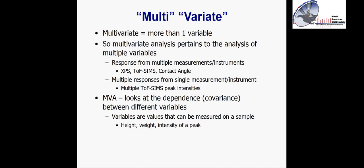When we talk about multivariate analysis, multivariate just means more than one variable — multi and variable. It pertains to the analysis of multiple variables, which could be a wide range of things: responses measured from multiple instruments, such as combining XPS, SIMS, and contact angle data, or multiple responses from a single measurement — for example, multiple TOF-SIMS peak intensities, which is what we're going to be talking about today.